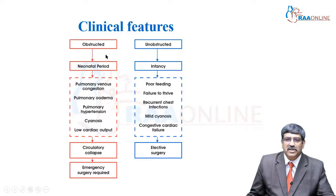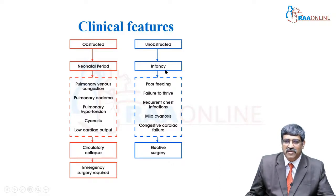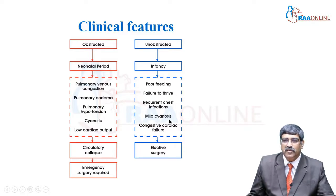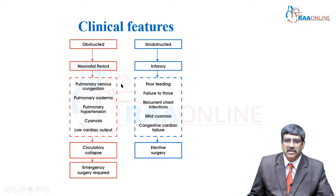Coming to the clinical features in unobstructed TAPVC, which is usually seen in infancy: poor feeding, failure to thrive, recurrent respiratory tract infection due to increased pulmonary blood flow, mild cyanosis, and the patient goes into congestive cardiac failure. This can be treated with elective surgery.